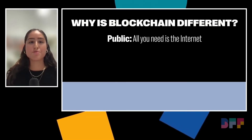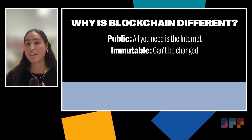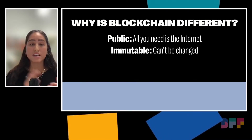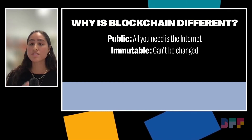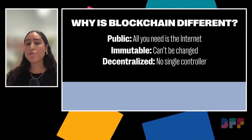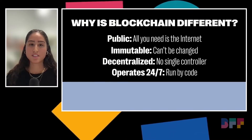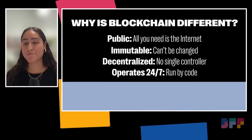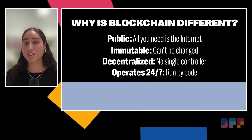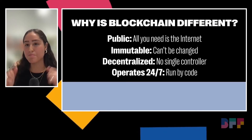So why is blockchain different? Number one, it's public — all you need is the internet to access it. Number two, it's immutable — once things are confirmed, they can't be modified. Number three, it's decentralized — there's a network of people running it, no single controller determining everything. Number four, it operates 24/7 — no more nine-to-five waiting for banks to open. This whole thing is run by code, which is why people say crypto never sleeps. It's completely automated; you don't have to worry about people moving the levers.